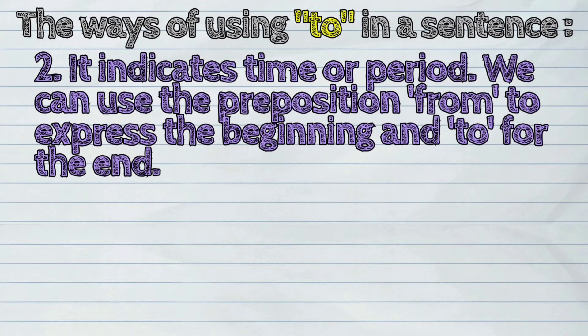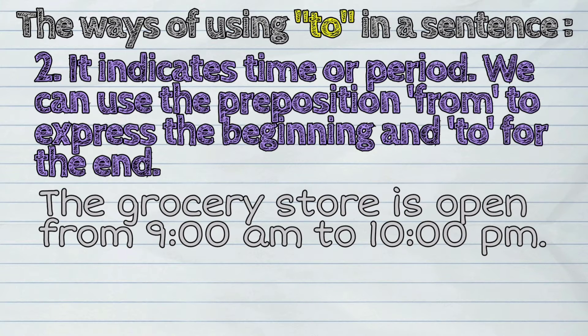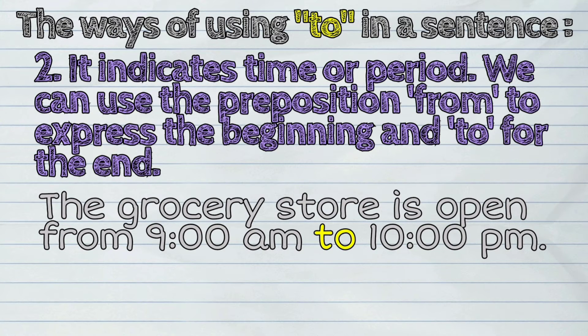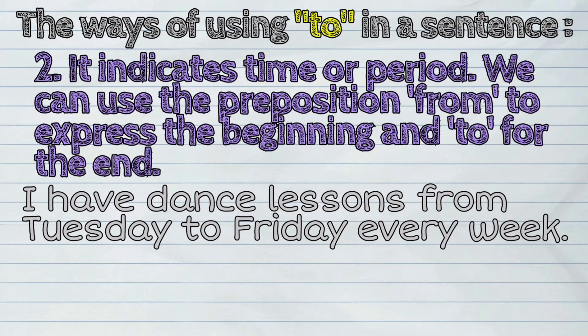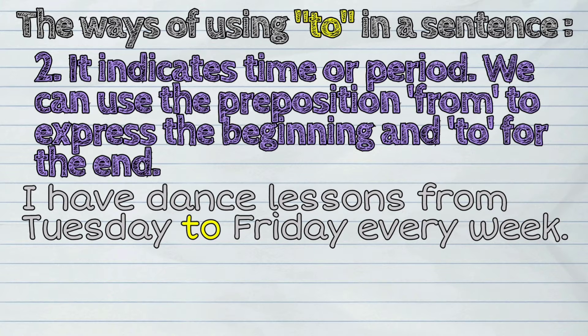Second, it indicates time or period. We can use the preposition 'from' to express the beginning and 'to' for the end. Examples: The grocery store is open from 9 o'clock a.m. to 10 o'clock p.m. I have dance lessons from Tuesday to Friday every week.